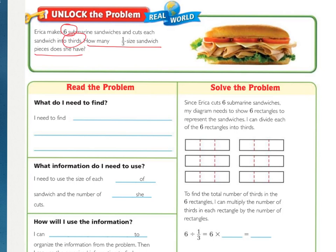Now the first couple boxes on our plan should be pretty easy to fill in. The first one, what do I need to find? I need to find what did you underline? Rewrite that in this box. You should have filled in I need to find how many one-third size sandwich pieces Erika has.